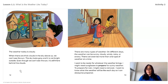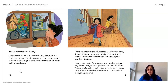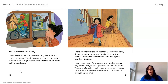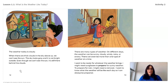I want to be ready for whatever the weather brings. I might need sunglasses to prepare for sunny weather, or a raincoat to prepare for rain. I want to know what the weather will be like each day so I can always be prepared. That is one of the reasons I look outside my window when I wake up — I need to know what to wear before I go outside, just like the girl in the story.